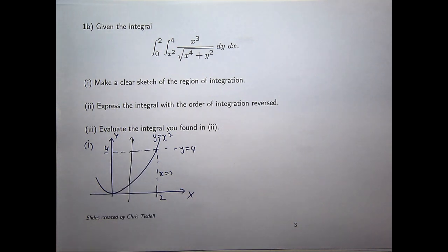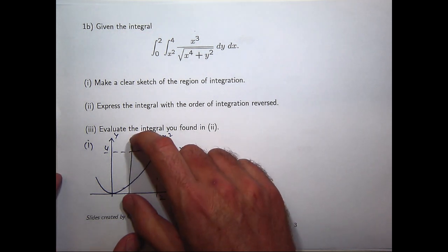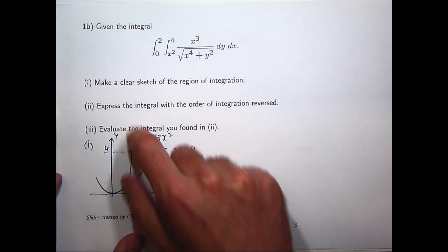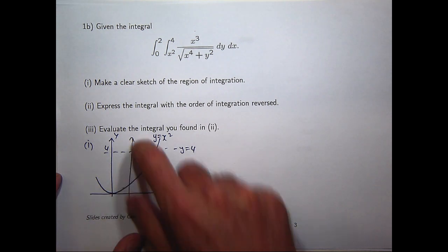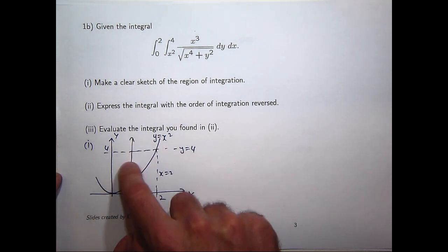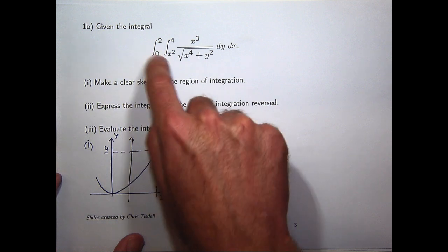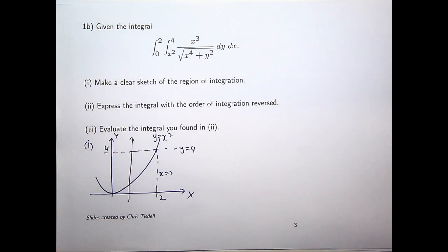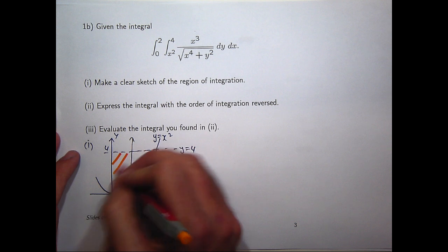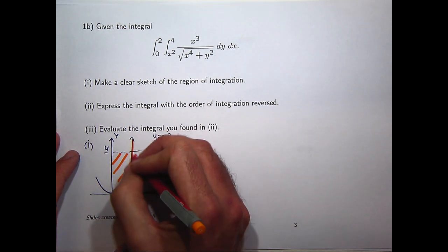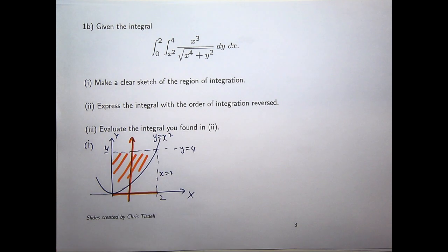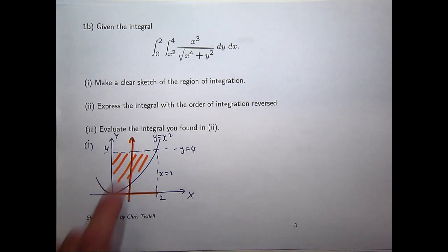Now, if you want further evidence for that, think about taking this vertical line and moving it from side to side. How far along the x-axis should I go to trace out this top region? Well, between 0 and 2, the two limits of our integration in the x variable. OK, so this is our shaded region of integration.